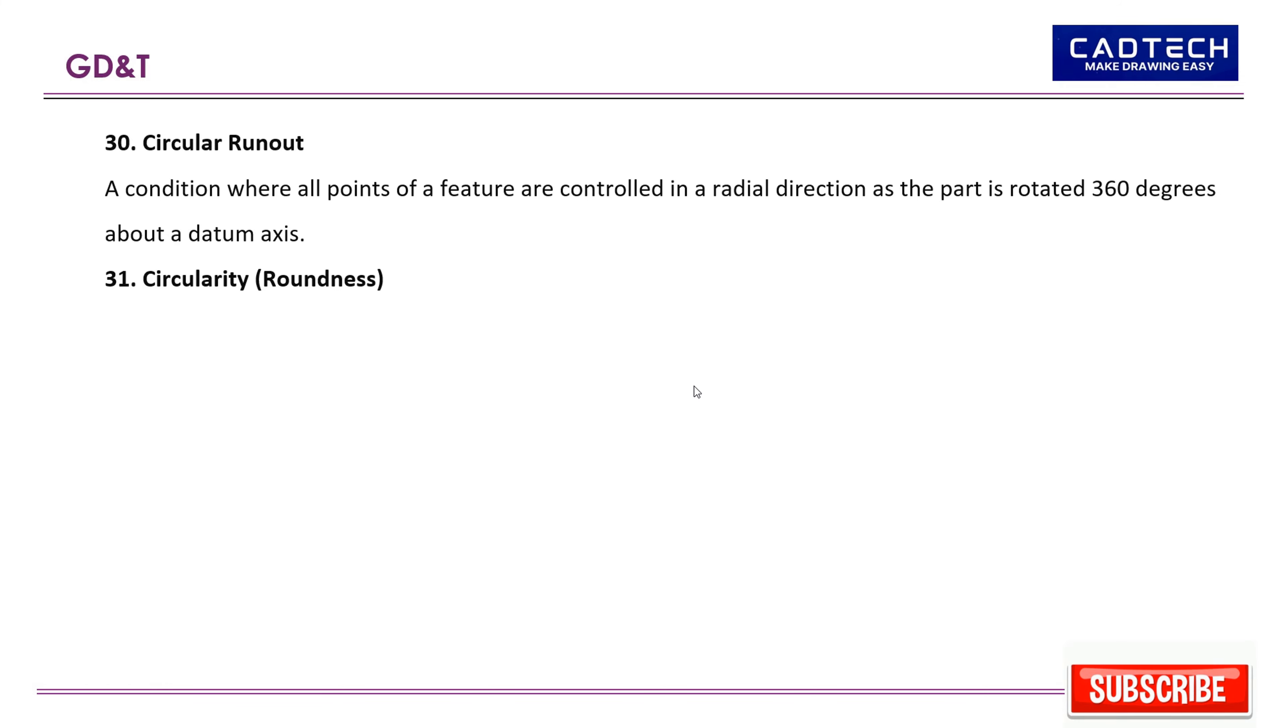31. Circularity, or roundness: A condition where all points of a surface of revolution are equidistant from a common axis. 32. Composite tolerance: A single tolerance that controls multiple features or a feature in multiple directions simultaneously.